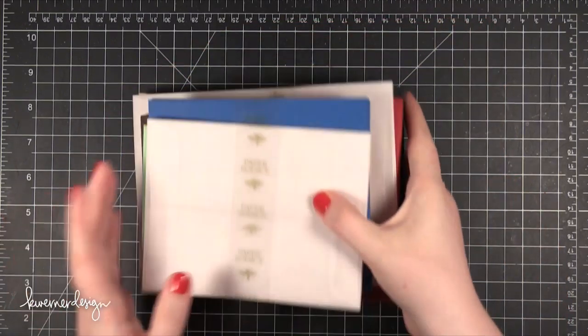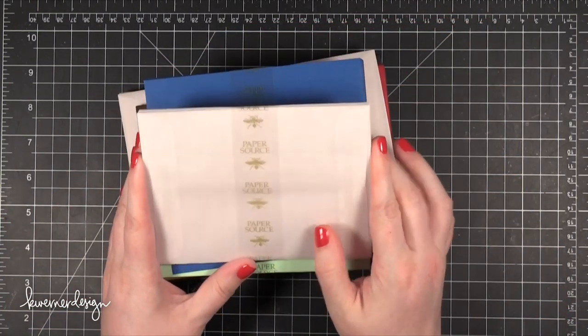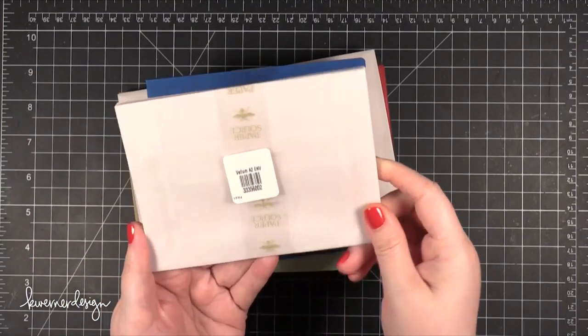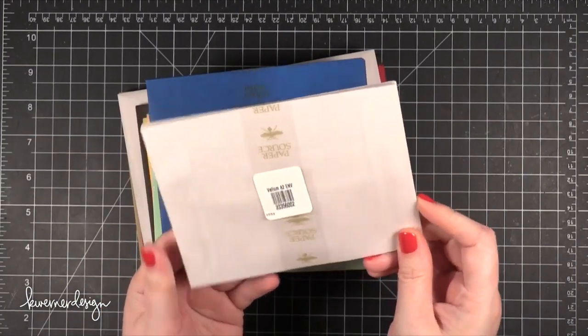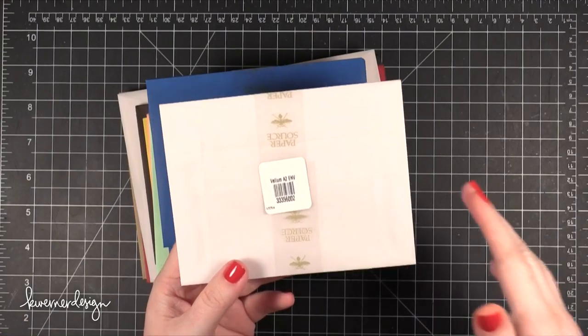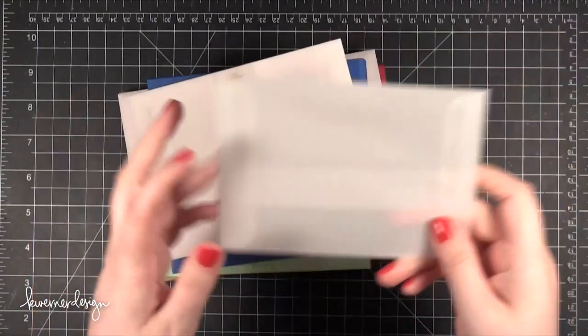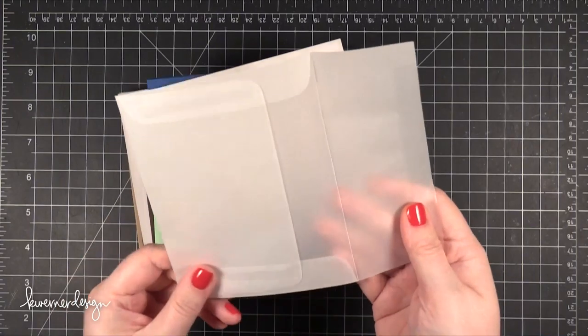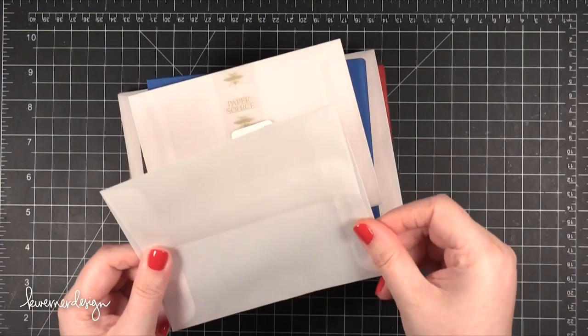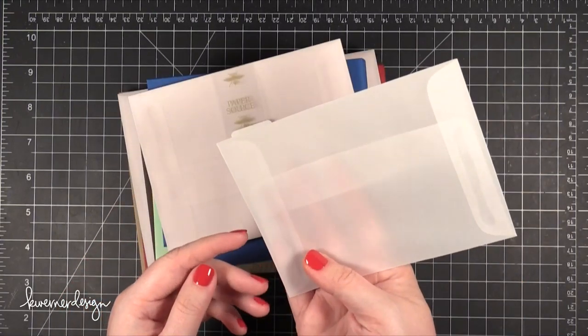Then I bought a bunch of envelopes from Paper Source. I thought they were so cool. So these are A2 envelopes. They'll fit your standard size cards like the four and a quarter by five and a half cards that I make all the time. So this is vellum. I just thought, I don't think I've ever seen a vellum envelope quite like this.